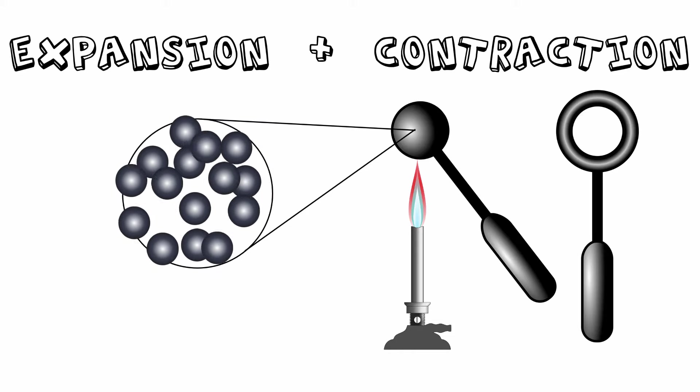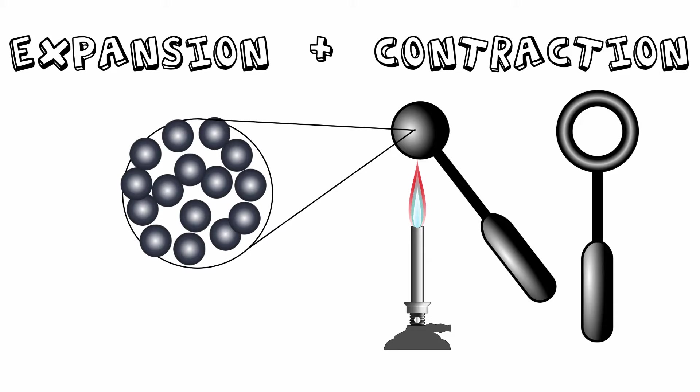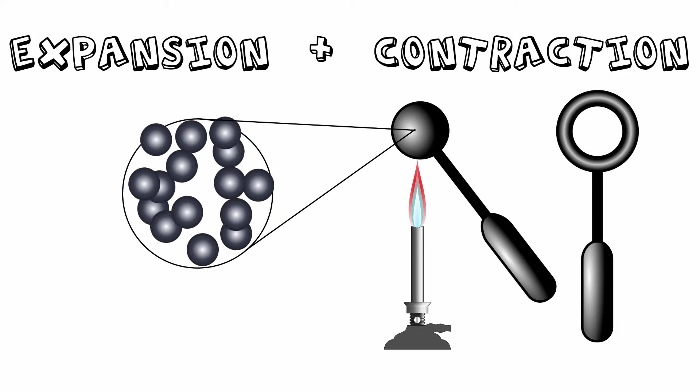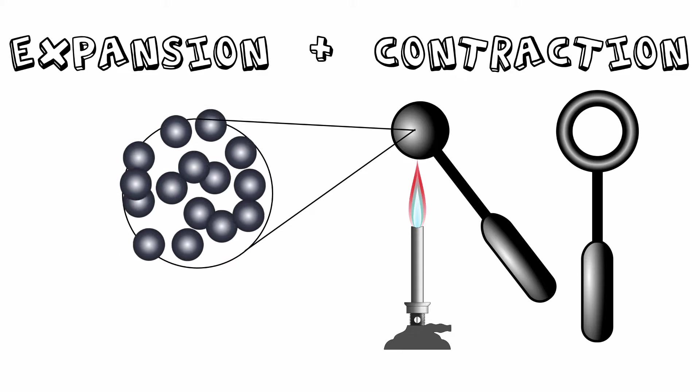This is because the space between the solid particles have expanded and therefore take up more room. So, the actual ball has expanded. It won't fit through the metal ring that had not been heated.